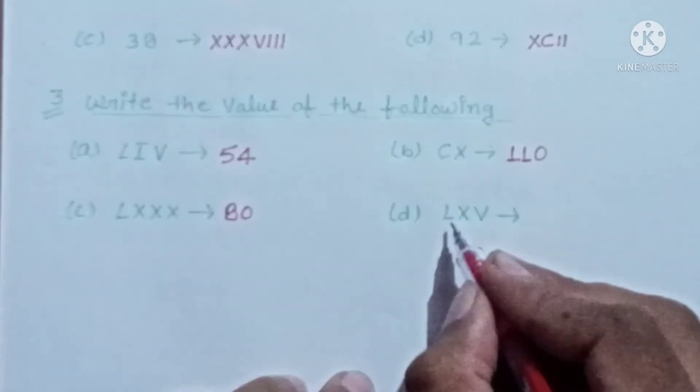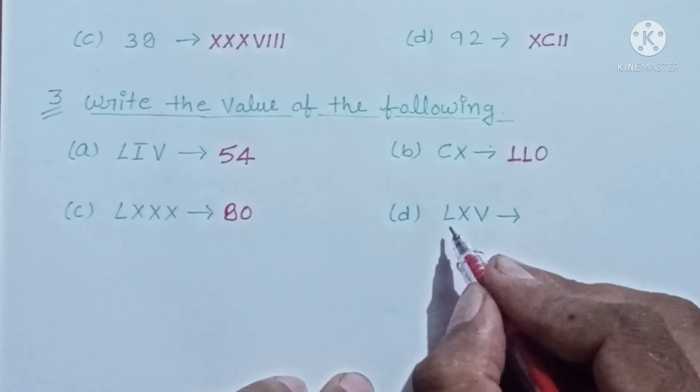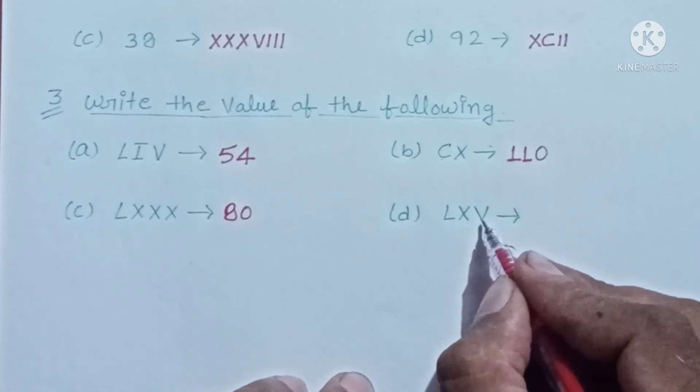Next is LXV. Its value: L for 50, X for 10. 50 plus 10 is 60, and V is 5, so 65.